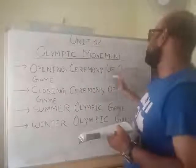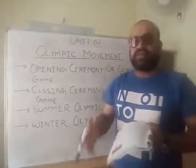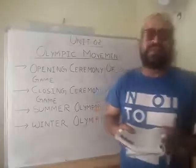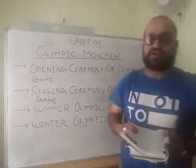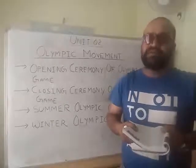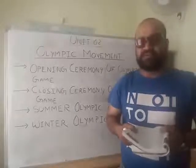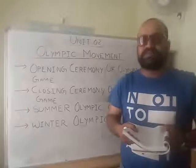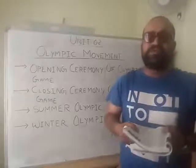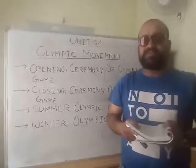Now for the closing ceremony of the Olympic Games. Sports persons from all countries assemble in the stadium for the closing ceremony. The mayor of that city and the president of the managing committees escort the president of the International Olympic Committee to the stadium, and he declares the games closed.